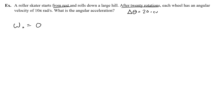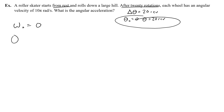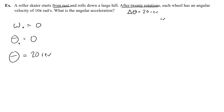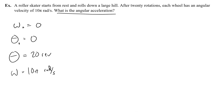You might also say the initial angular position is zero and the final is 20 revolutions. Either one is fine. I'm going with this since it fits the motion equations better. So initial angular position is zero — the wheel just starts unrotated — and the final angular position theta is 20 rotations or revolutions. The final angular velocity omega is 10 pi radians per second. And the unknown we want to find is angular acceleration, alpha.